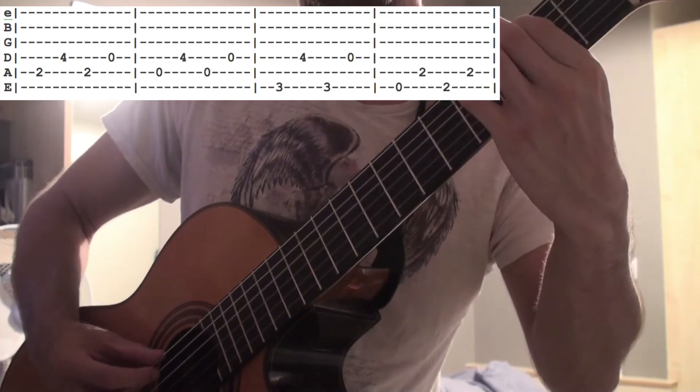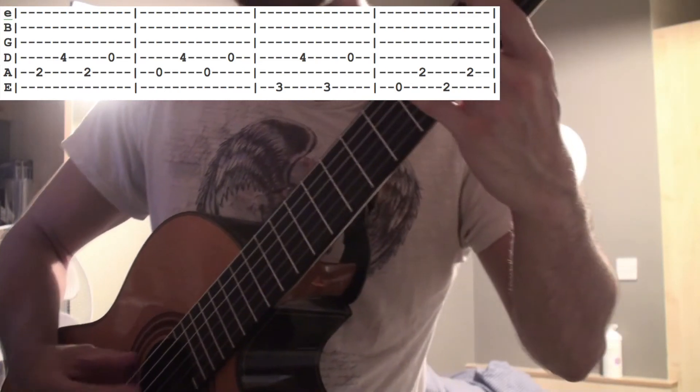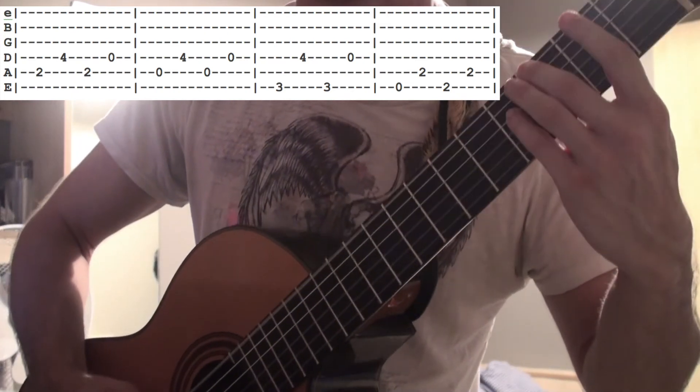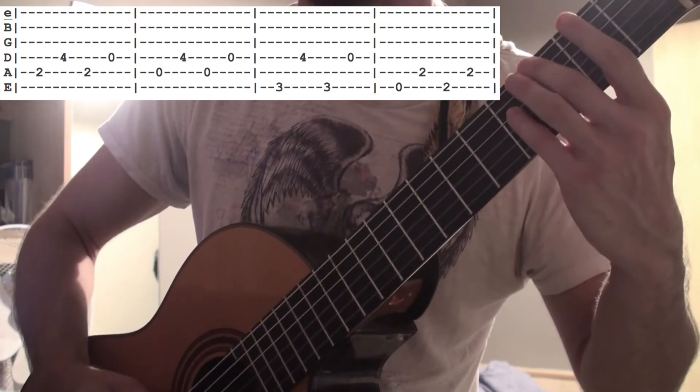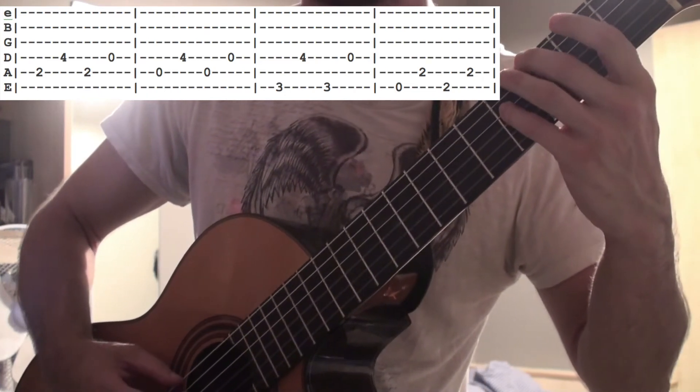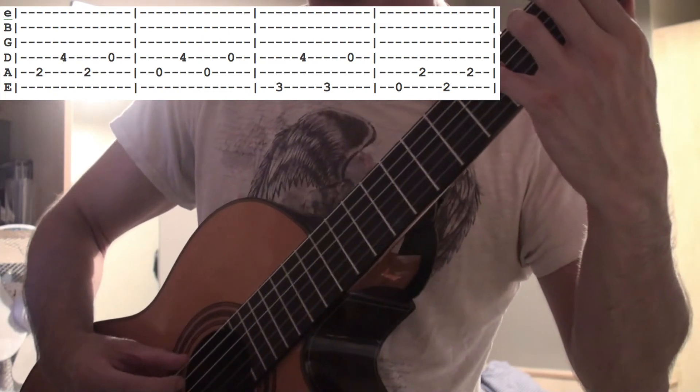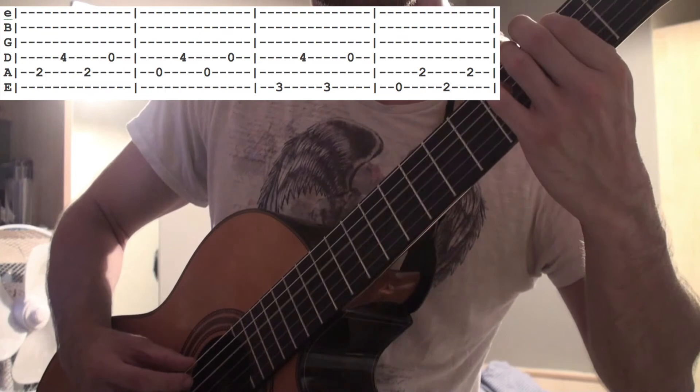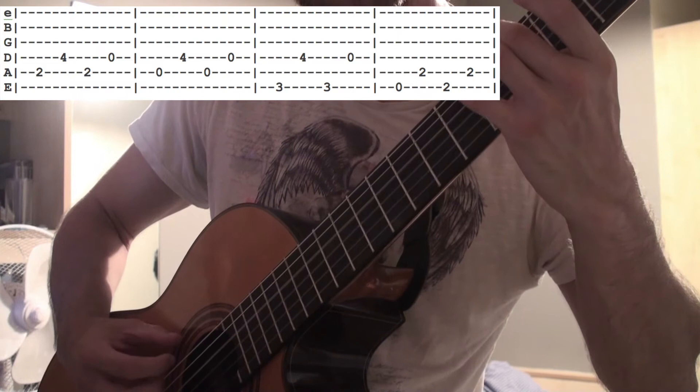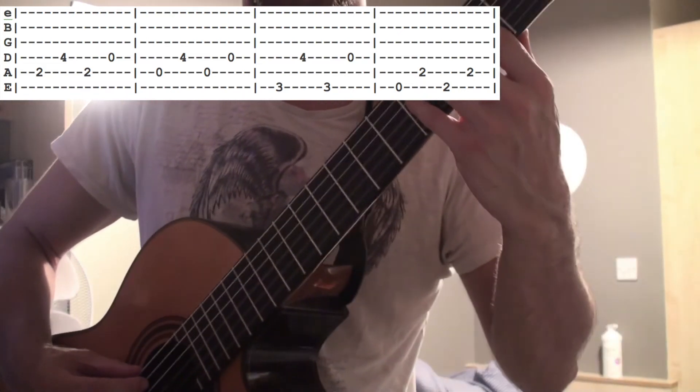And then it goes to this, the pattern that I've already showed you. 3rd fret low E, 4th fret D string, 3rd fret, and then you do that open on the D again. So it's just like those 3 patterns going around.